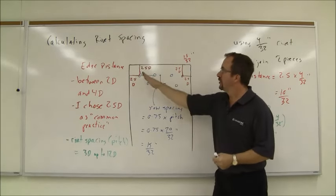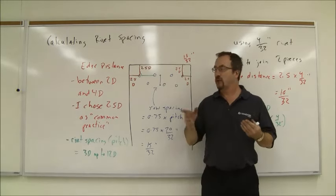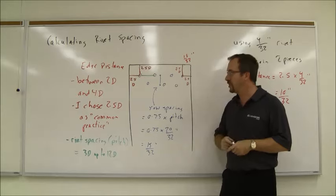So I've got my edge distance. I also have to figure out how far apart the rivets are going to be when I'm looking at one row. To do that, that rivet spacing—it's also called pitch.